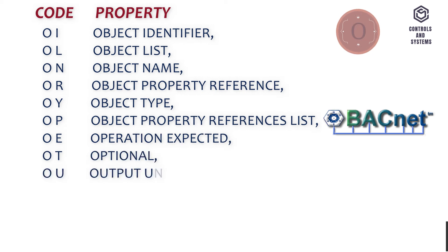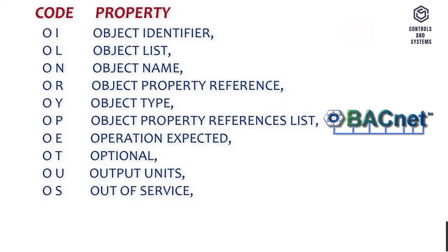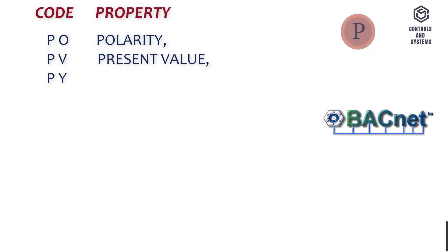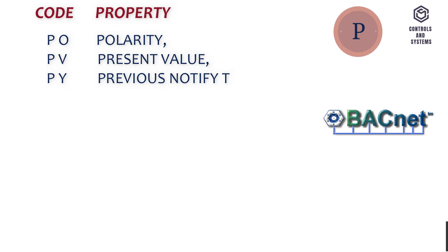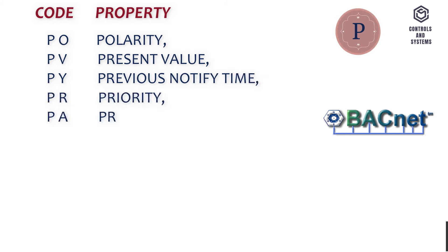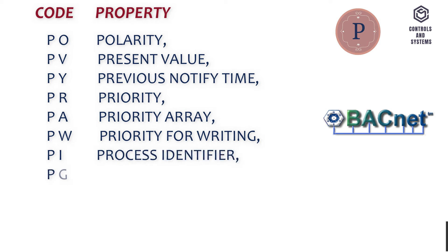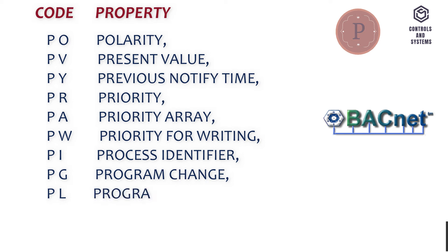C-M-O-U - Optional, C-M-O-S - Output Units, C-M-O - Out Of Service, C-M-P - Polarity, C-M-P - Present Value, C-M-P - Previous Notify Time, C-P-A - Priority, C-P-W - Priority Array, C-P-I - Priority For Writing, C-P-E-G - Process Identifier, C-P-L - Program Change.